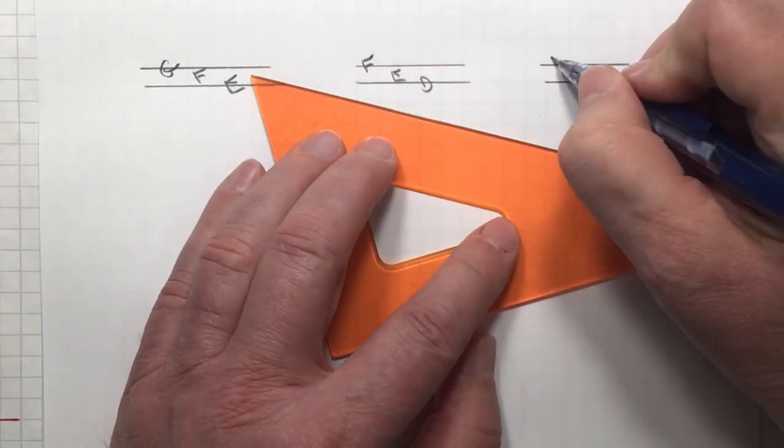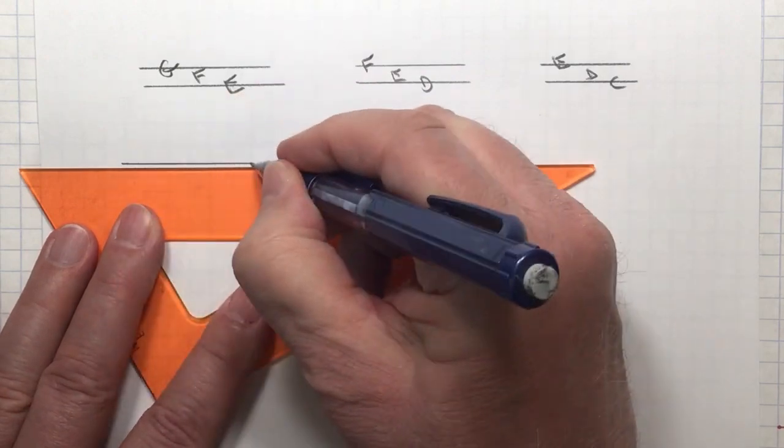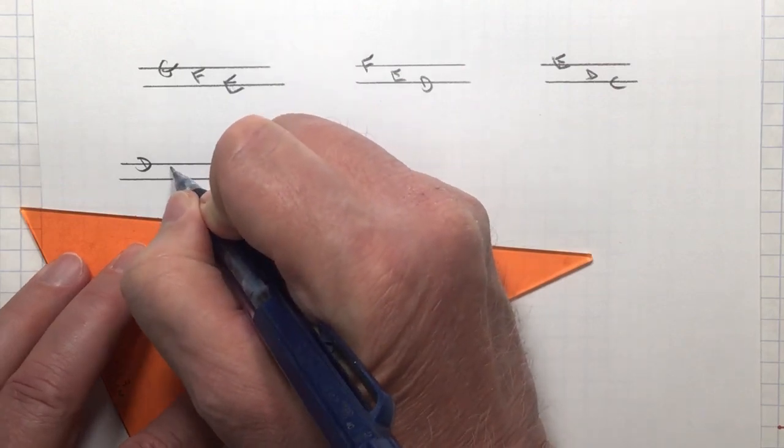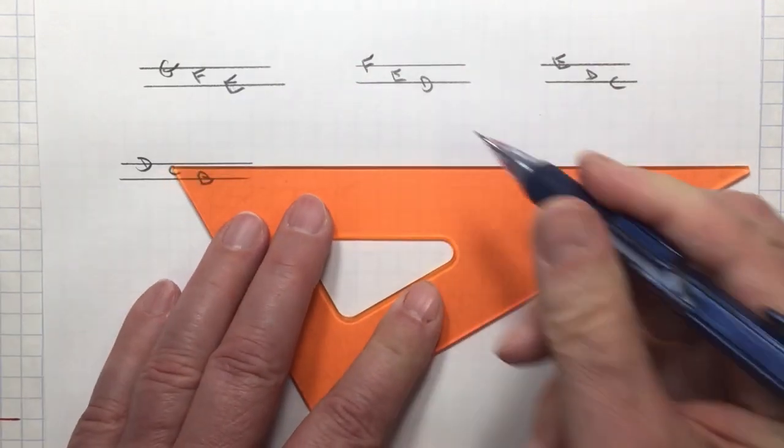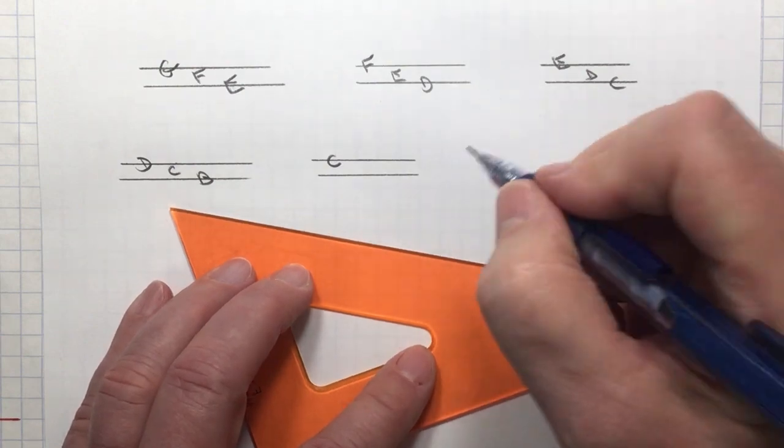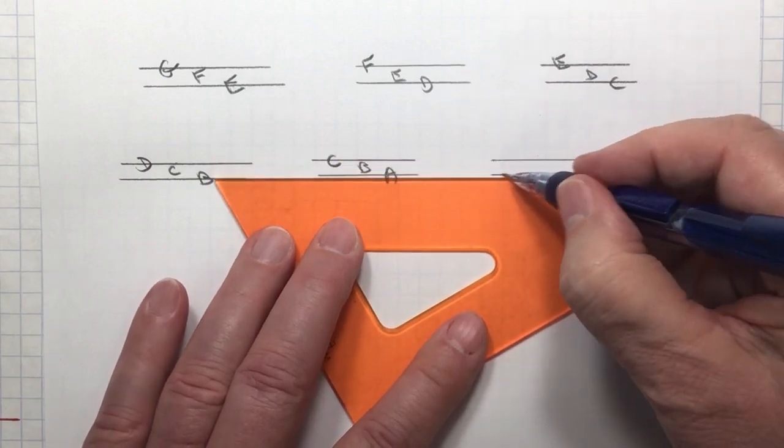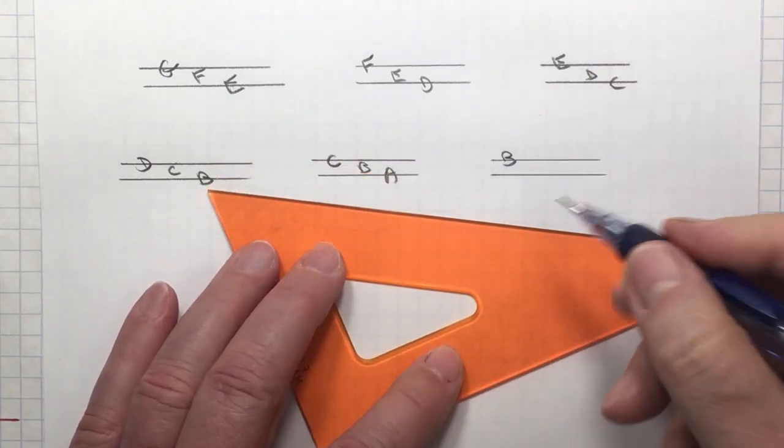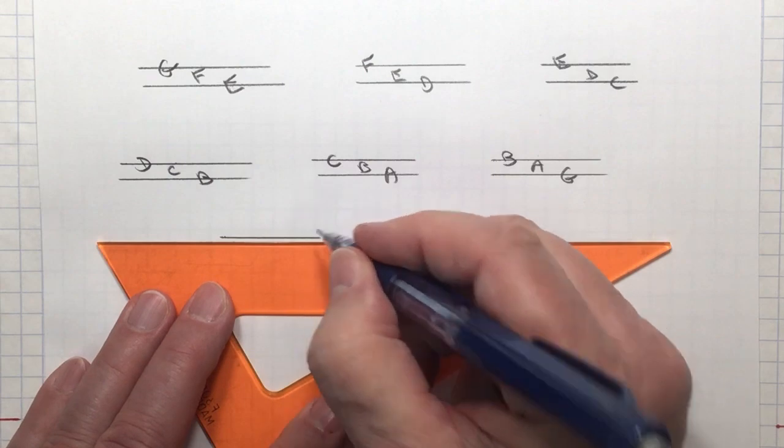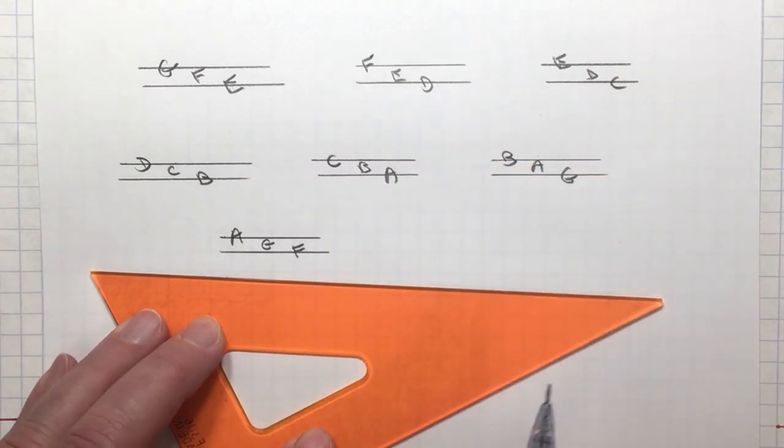Could be E implying D and C. D line implies C and B. Naming the second line C implies B and A. Naming the second line B implies A and G. And naming the second line A implies G and F.